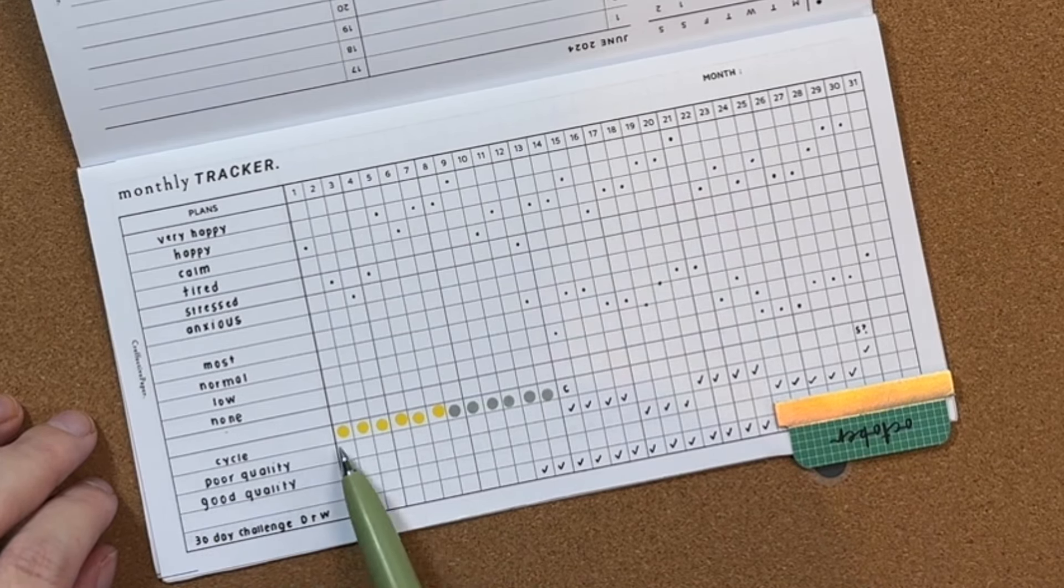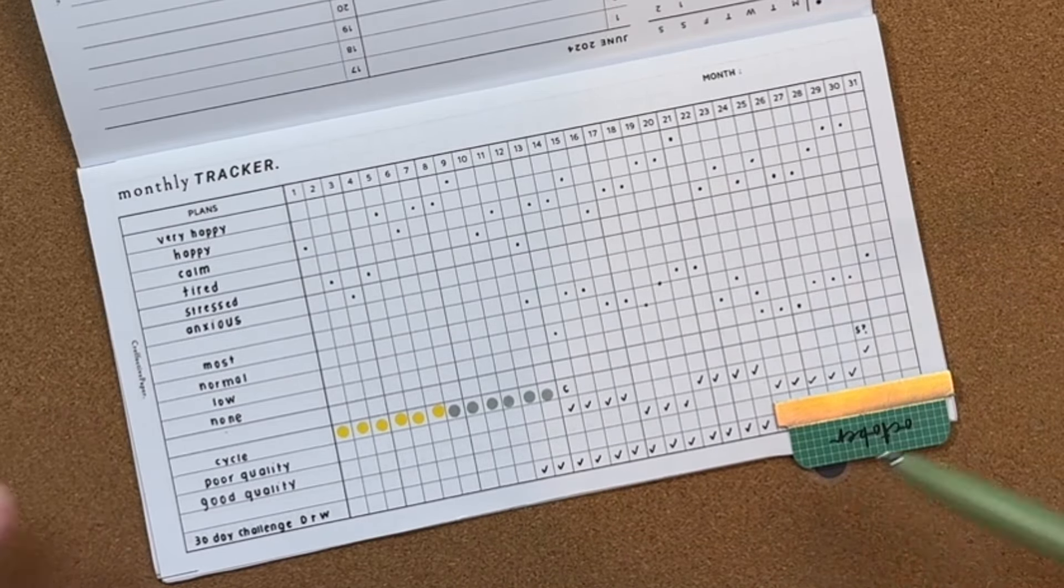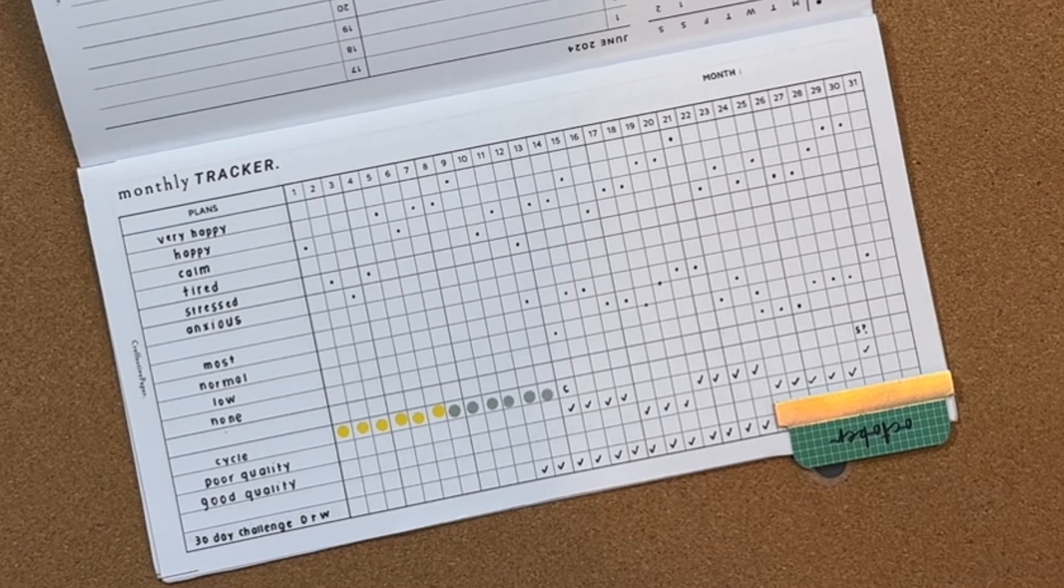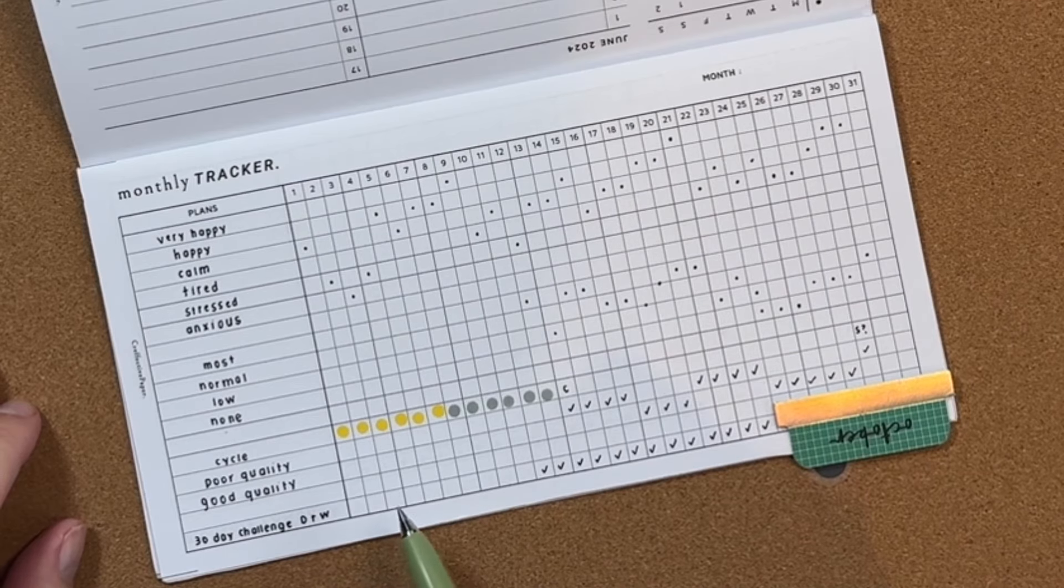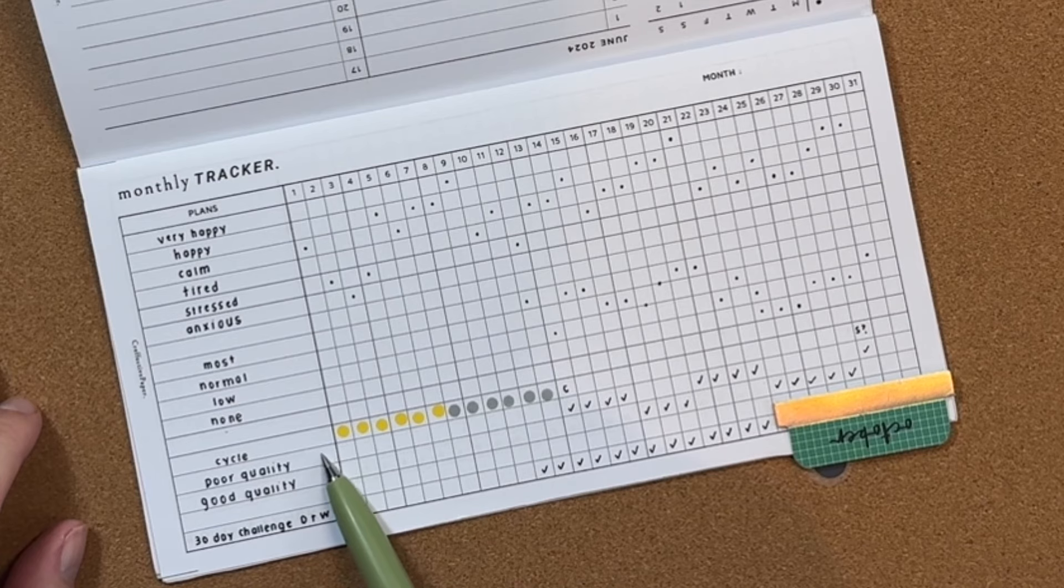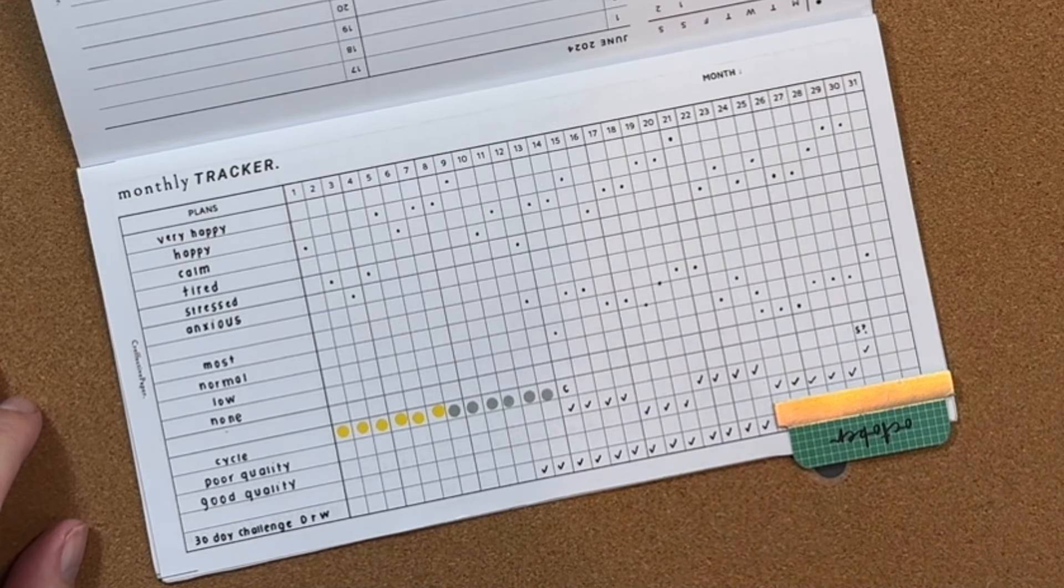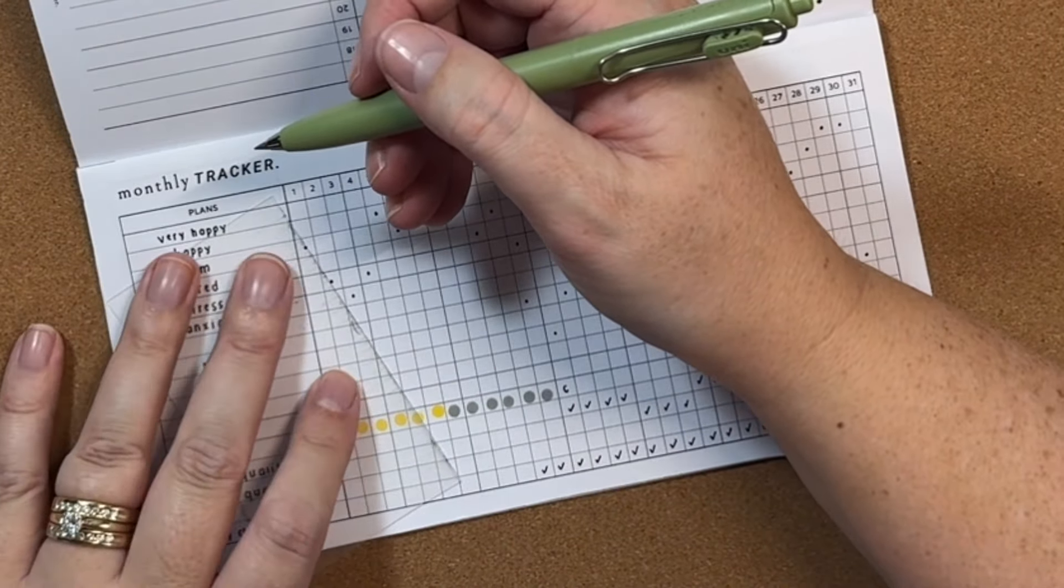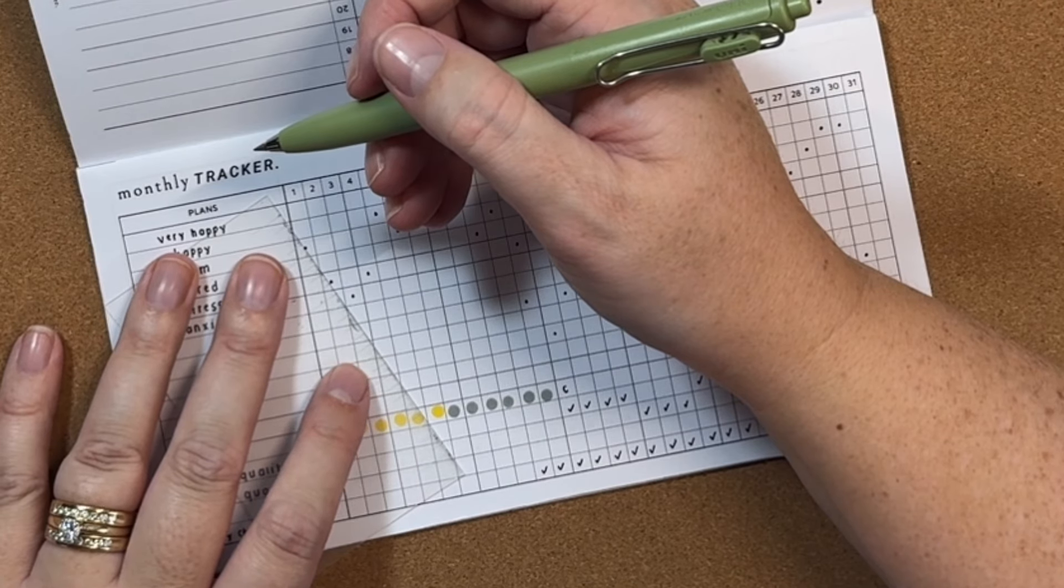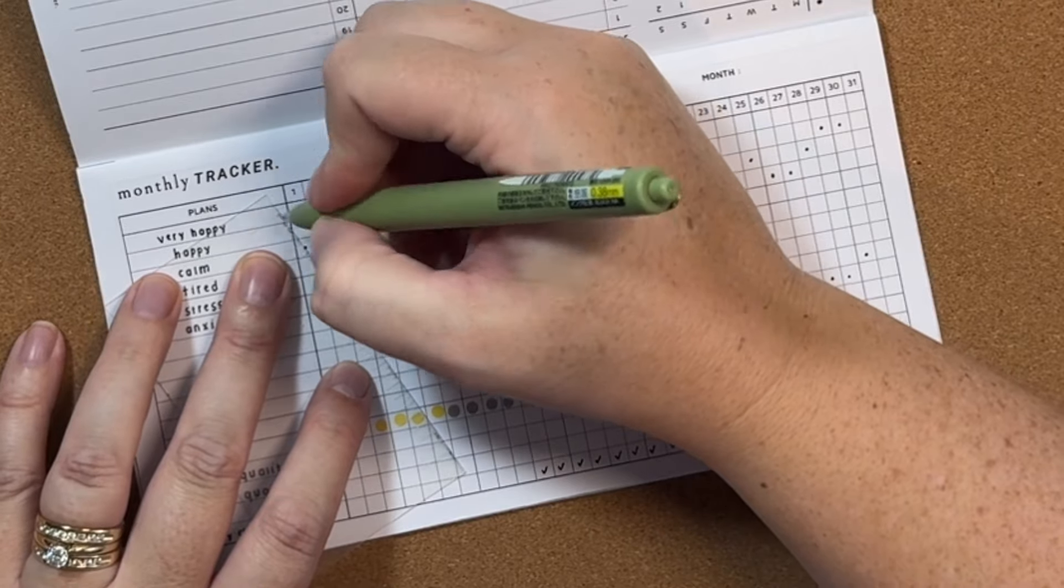So this didn't turn out the way that I planned it to, which I think I'm going through perimenopause, so I don't know. We'll see where we're at. I guess I'm going to give it a couple of months. And then this is my sleep, so if I got good quality sleep or poor quality sleep, I marked that as well. So I'm going to go ahead and go through on this top section here and connect my dots to finish out October and my mood.